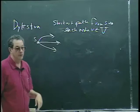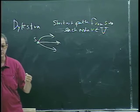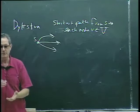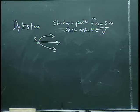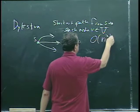Pop quiz: what's the time bound for Dijkstra's algorithm? The answer is n squared. There is an implementation closer to n log n, but n squared is the standard bound.